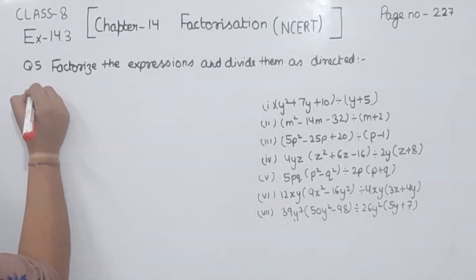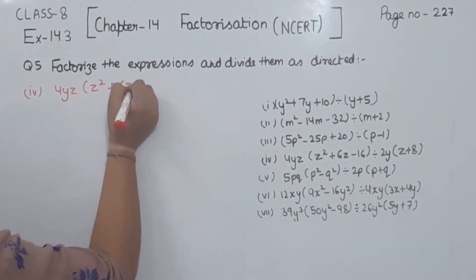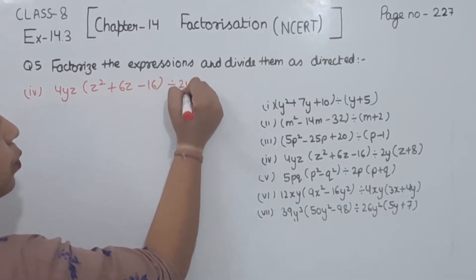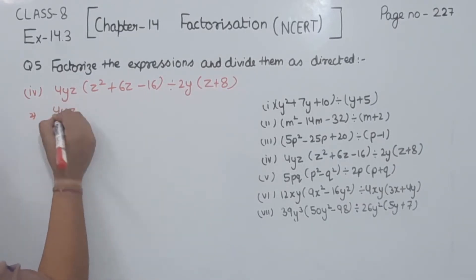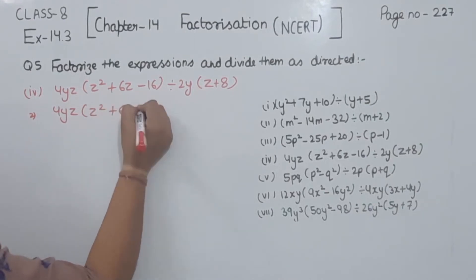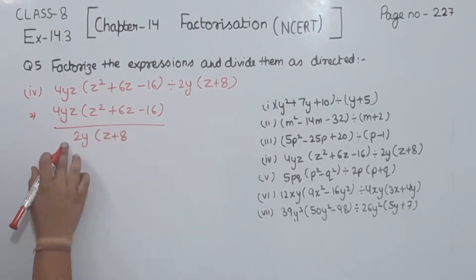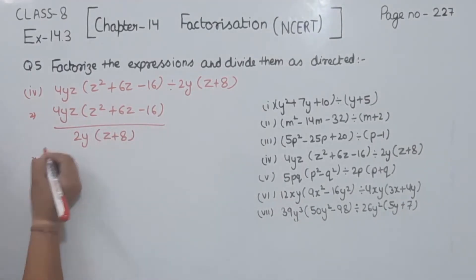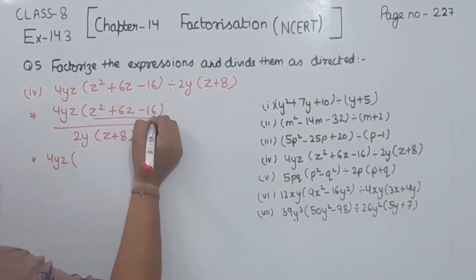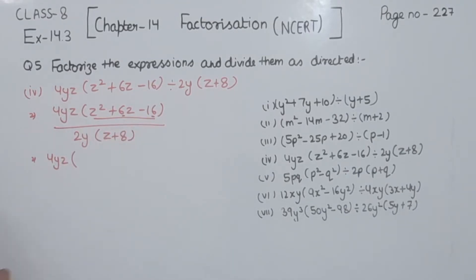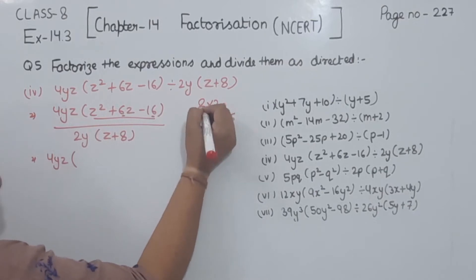Now comes part 4. This one we are having is 4yz times (z squared plus 6z minus 16) divided by 2y times (z plus 8). So I am going to write here 4yz times (z squared plus 6z minus 16) divided by 2y times (z plus 8). We need to find two numbers that multiply to give 16 and add or subtract to give 6. So 8 minus 2 gives 6 and 8 multiplied by 2 is 16.